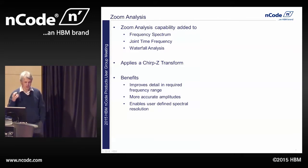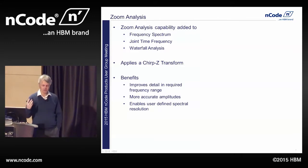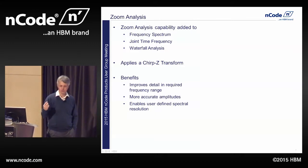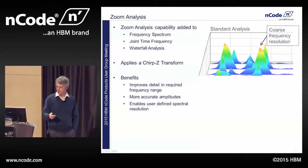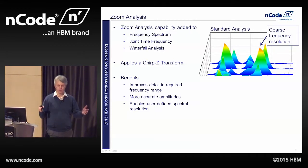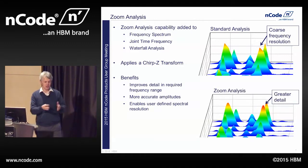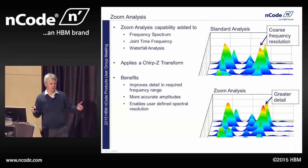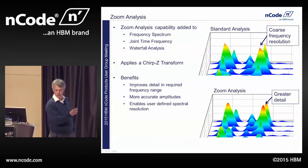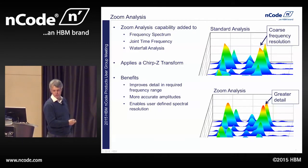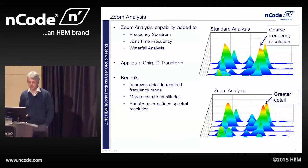We've also added zoom transform to three different glyphs — frequency spectrum, joint time-frequency, and waterfall analysis. The zoom transform allows you to zoom in on a particular area of data: if you've got a number of points in your buffer, you get a particular frequency resolution currently. With the zoom transform, you can pick top and bottom frequencies and number of points between them to get whatever frequency resolution you want, zooming in on an area of interest or getting better resolution in a particular area.